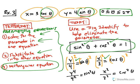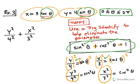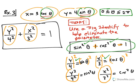Adding the two squared equations: sin²θ + cos²θ = y²/16 + x²/9 = 1. This eliminates the parameter — θ no longer appears, giving us the rectangular equation x²/9 + y²/16 = 1, which is the standard form of an ellipse.